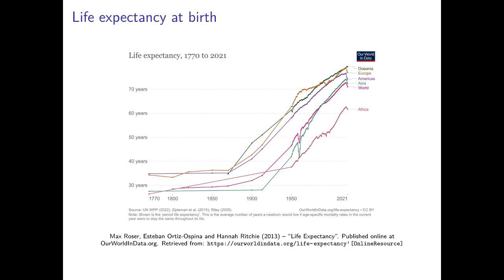One of the main reasons why life expectancy was so low at that time was the high child mortality rate, because almost every second child died before the age of five, and that has a huge effect on average life expectancy. Then, with economic growth, with increases in income, with technological progress, with increasing standards in hygiene, life expectancy started to increase and child mortality started to decrease quite strongly. Fortunately, nowadays child mortality is much less of a problem than it was a few hundred years ago.